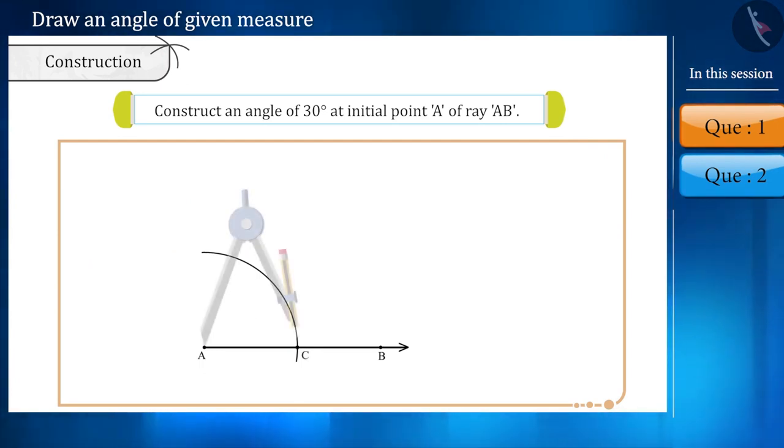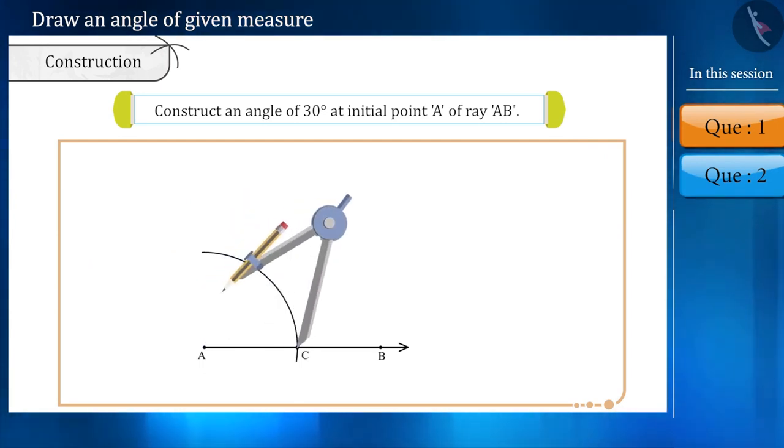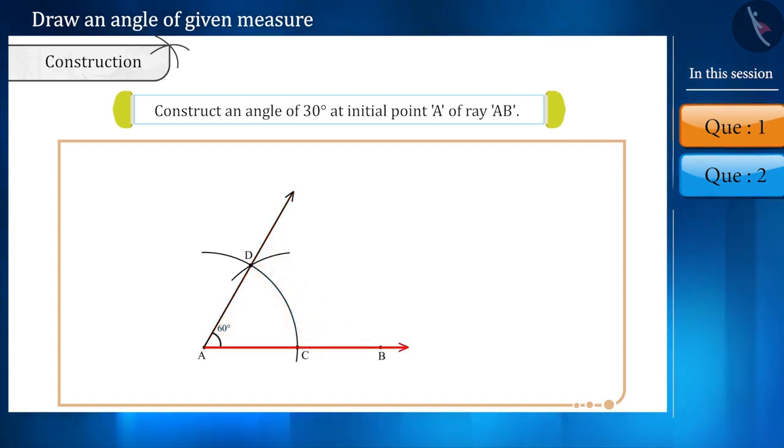Now, without changing the measurement, we will draw one more arc from point C which will intersect the first arc at point D. Now, on angle A, by constructing angle bisector, we can form an angle of 30 degrees on ray AB.